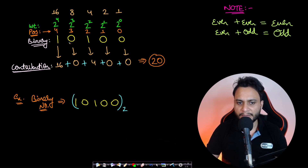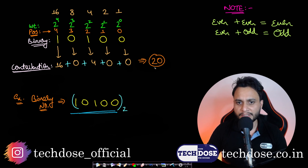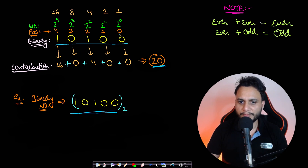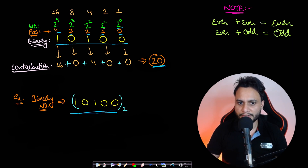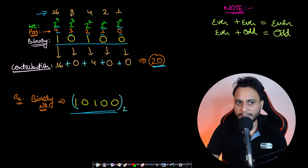Let's take the binary number 10100. If you think about how a binary number is converted to a decimal number, you write out the positions from right to left as 0, 1, 2, 3, and 4. Each position has a weight: 2 to the power 0, 2 to the power 1, and so on up to 2 to the power 4, giving weights of 1, 2, 4, 8, and 16. These weights increase exponentially as you move from right to left.